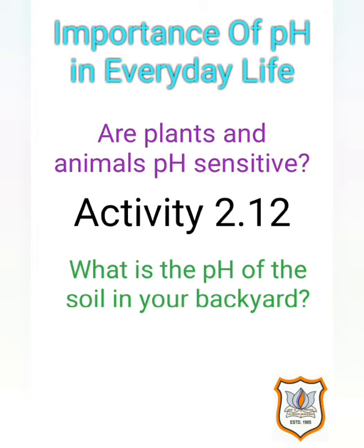Activity 2.12: Put about 2 grams of soil in a test tube and add 5 ml of water to it. Shake the contents, filter them, and collect the filtrate. Check the pH of the filtrate with the help of universal indicator paper. If the pH of the soil is 7, it is neutral and plants grow well. If the pH is less than 7, the soil is acidic and plants are affected. If the pH is more than 7, that is basic, plants are again affected. So we need pH 7 only.